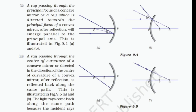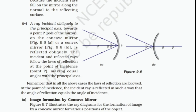A ray passing through the center of curvature of a concave mirror, or directed towards the center of curvature of a convex mirror, after reflection, is reflected back along the same path — illustrated in figure 9.5A and B. The light rays come back along the same path because the incident rays fall on the mirror along the normal to the reflecting surface. For a ray incident obliquely to the principal axis towards point P, the pole of the mirror, on the concave mirror (figure 9.6A) or a convex mirror (figure 9.6B), the ray is reflected obliquely. The incident and reflected rays make equal angles with the principal axis. In all these cases, the laws of reflection are followed — the angle of reflection equals the angle of incidence.